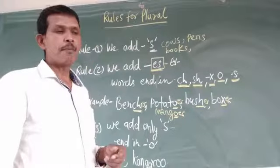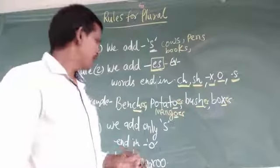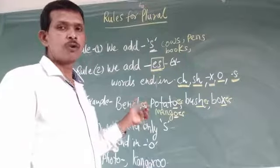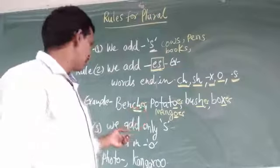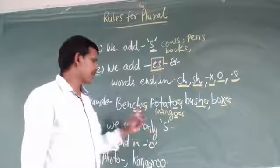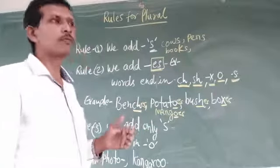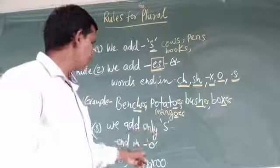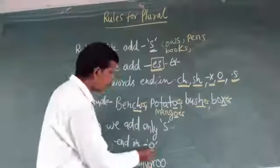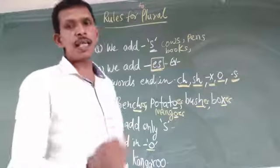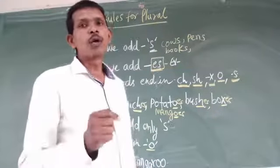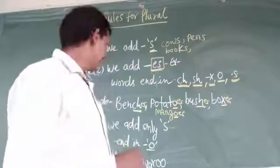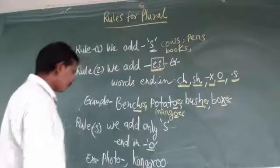These are rules for making nouns plural. There are some words ending with letter O, but they take only 's'.